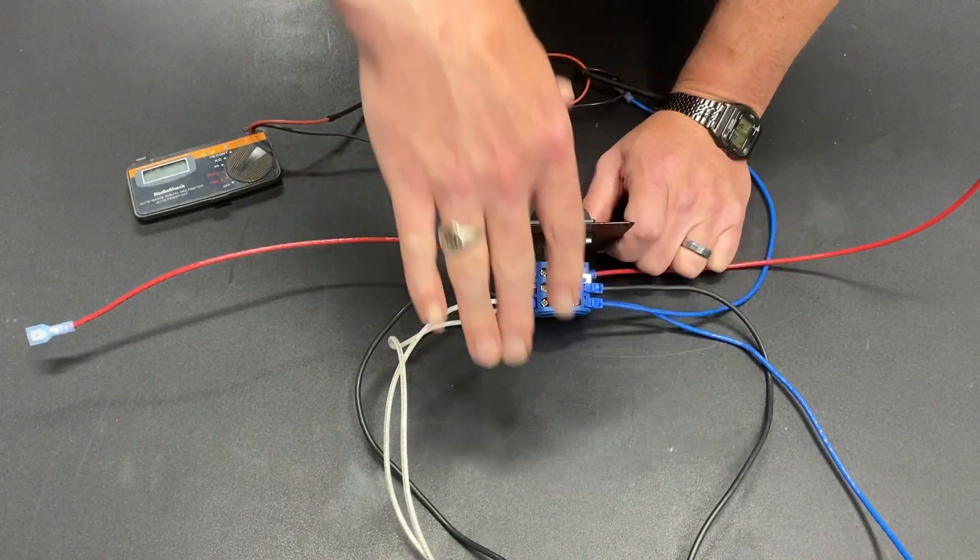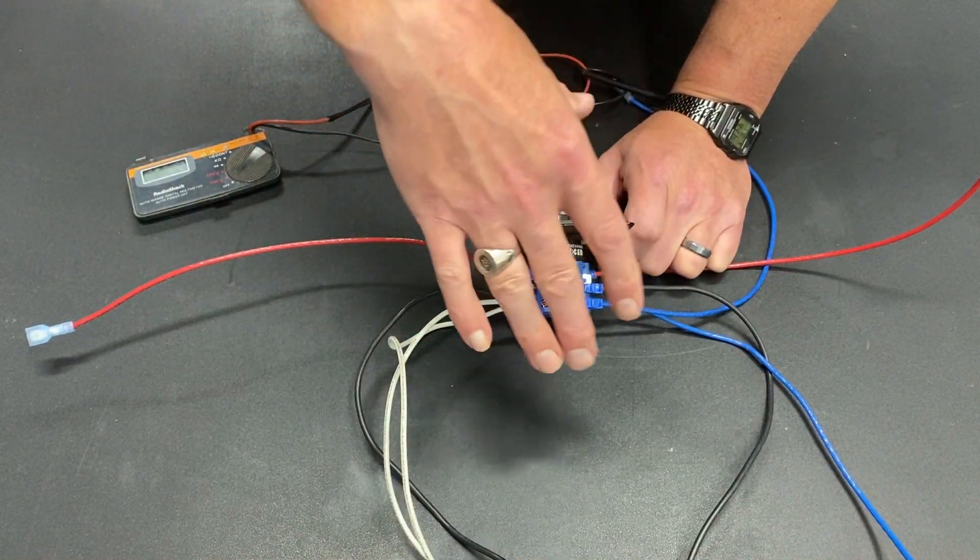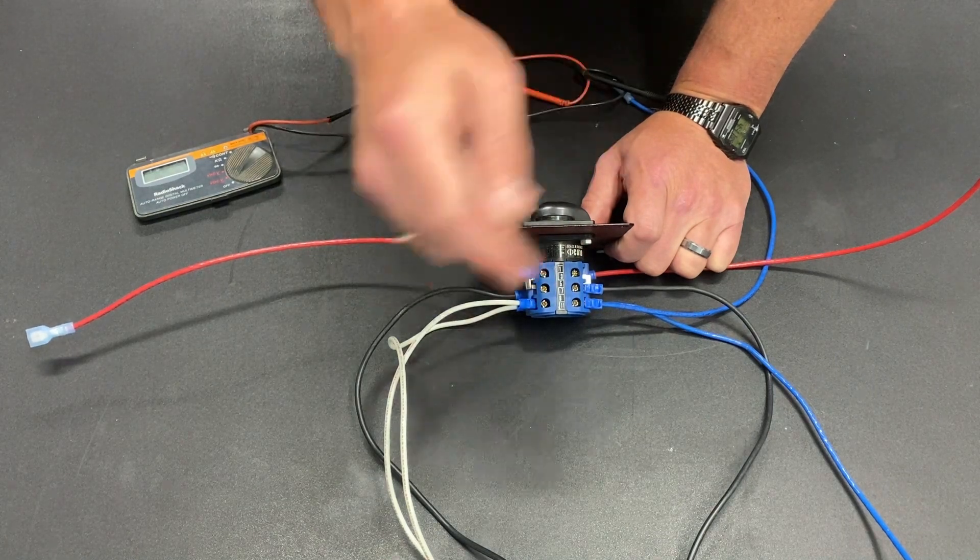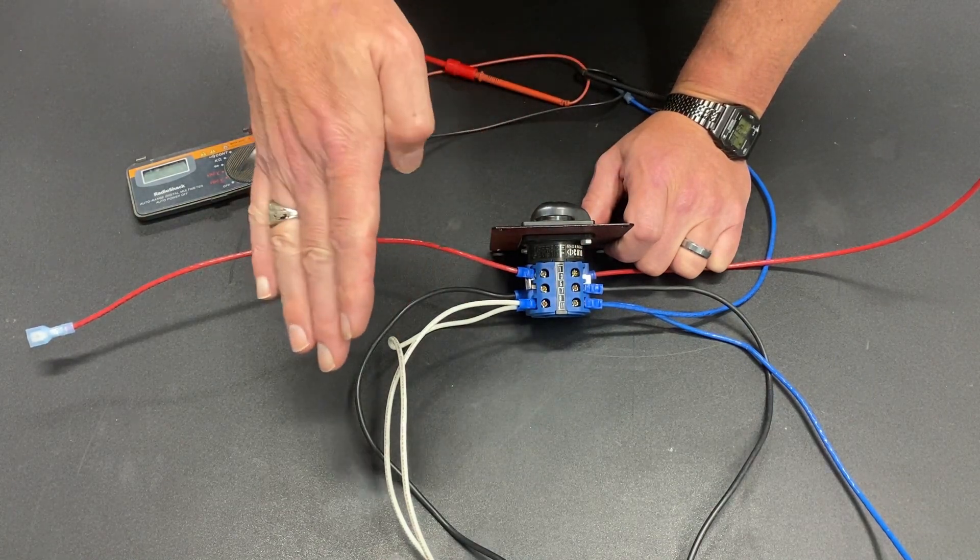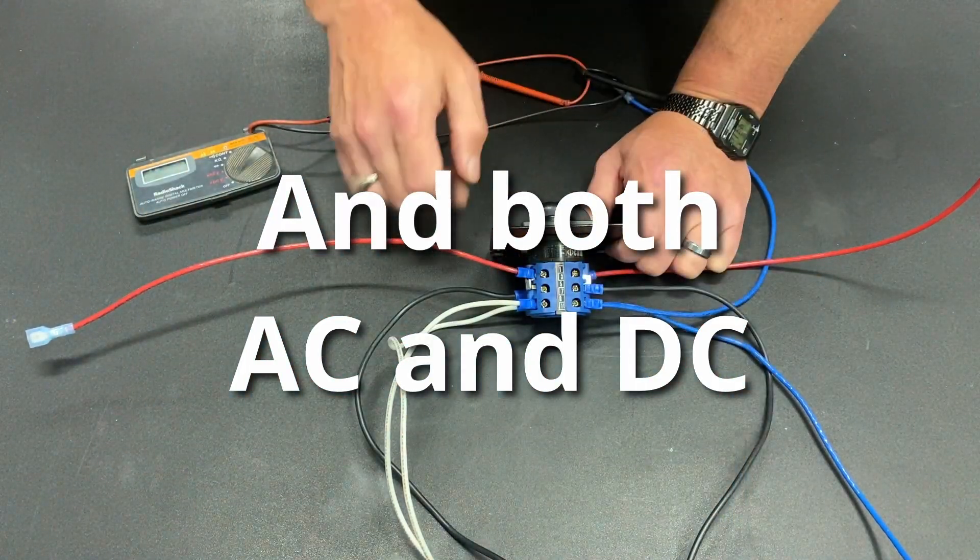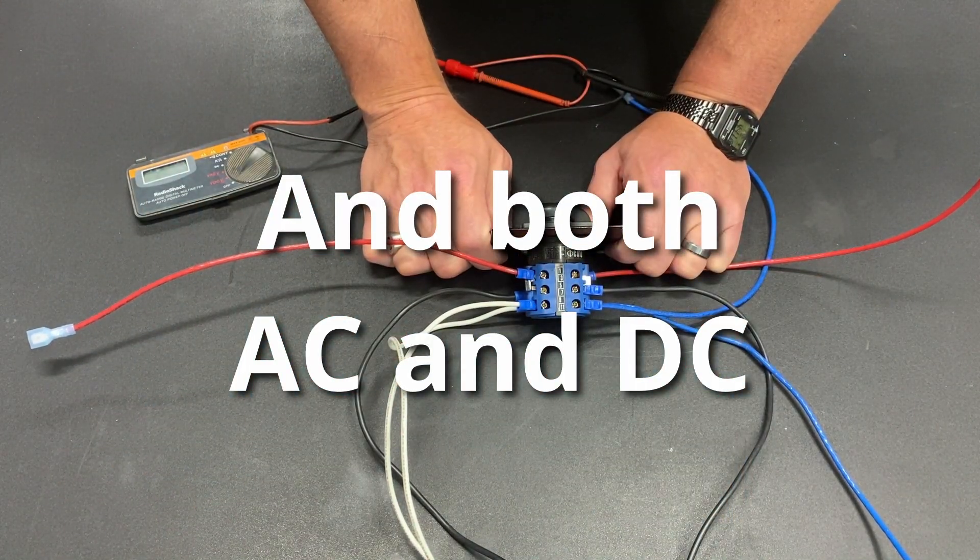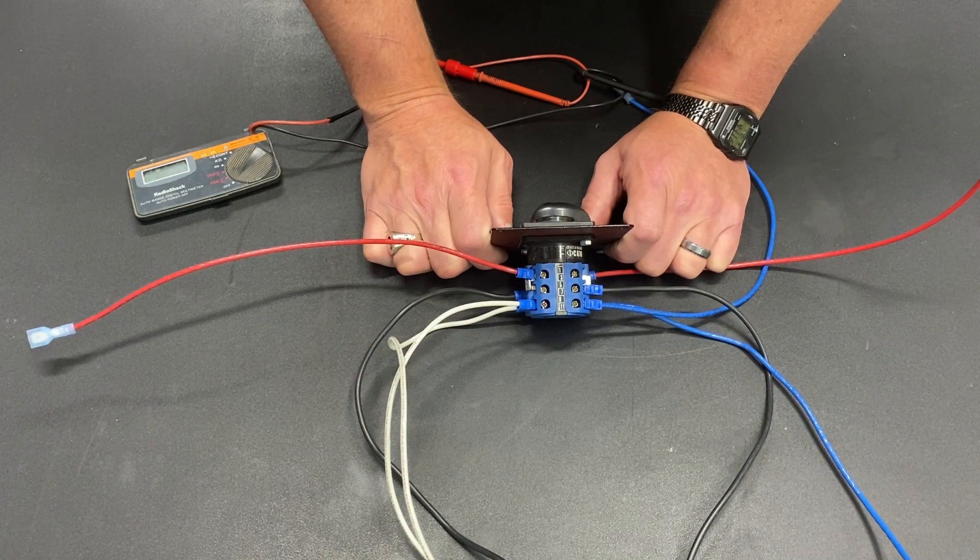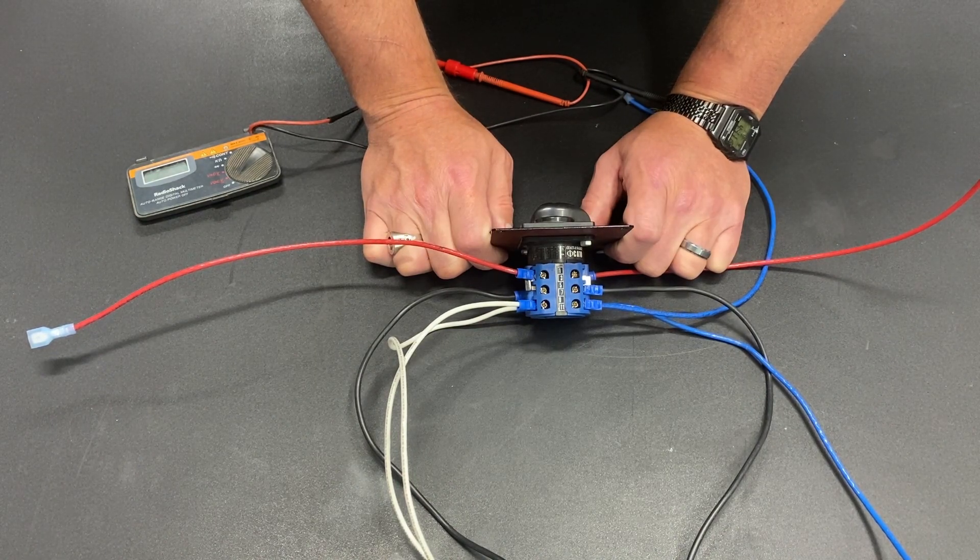Once I had this all wired up and I thought everything was in the correct spot I tested it again. Especially since we're dealing with using this as a direction reversing, we're reversing the positive and the negative. If you don't have it set up correctly you could short something out and create all kinds of problems.